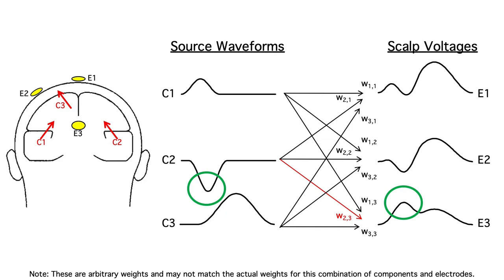which just means that the electrode is on the opposite side of the dipole. In this example, there's a negative weight from component two to electrode three, so even though the source waveform is negative going, you see a positive going deflection at that time in the scalp voltage.